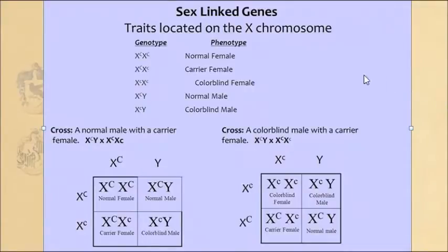We know that in order for an organism to be female, it has to have two X chromosomes. And in order for an organism to be male, it has to have an X and a Y chromosome. We've already learned that the gene for colorblindness is only found on the X chromosome — it's not found on the Y chromosome, so it's only on the X.